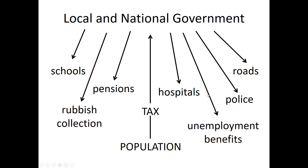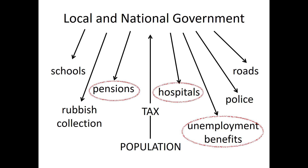It insures you against old age in the form of paying pensions, against illness — it provides healthcare — and against unemployment. Your National Insurance charges are supposed to cover your unemployment benefits. In fact, nowadays all these things are bundled in with general taxation and National Insurance is a bit of a historical anachronism. However, it is calculated separately and you need to know how to work it out.